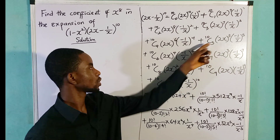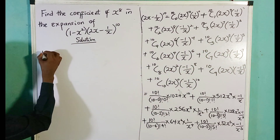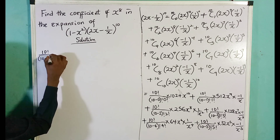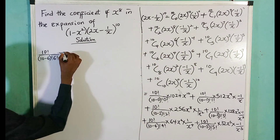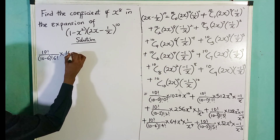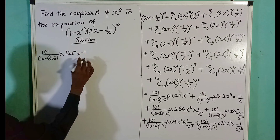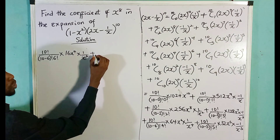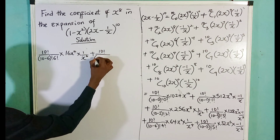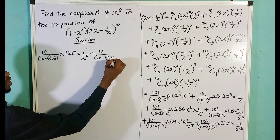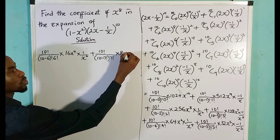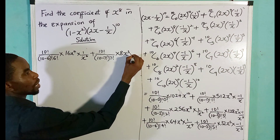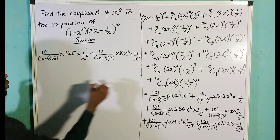Plus 10 combination 6 = 10! / (4! × 6!) times 2^4 = 16, so 16x^4, times 1/x^6 (positive, even power). Plus 10 combination 7 = 10! / (3! × 7!) times 2^3 = 8, giving 8x^3, times (minus 1/x^7).